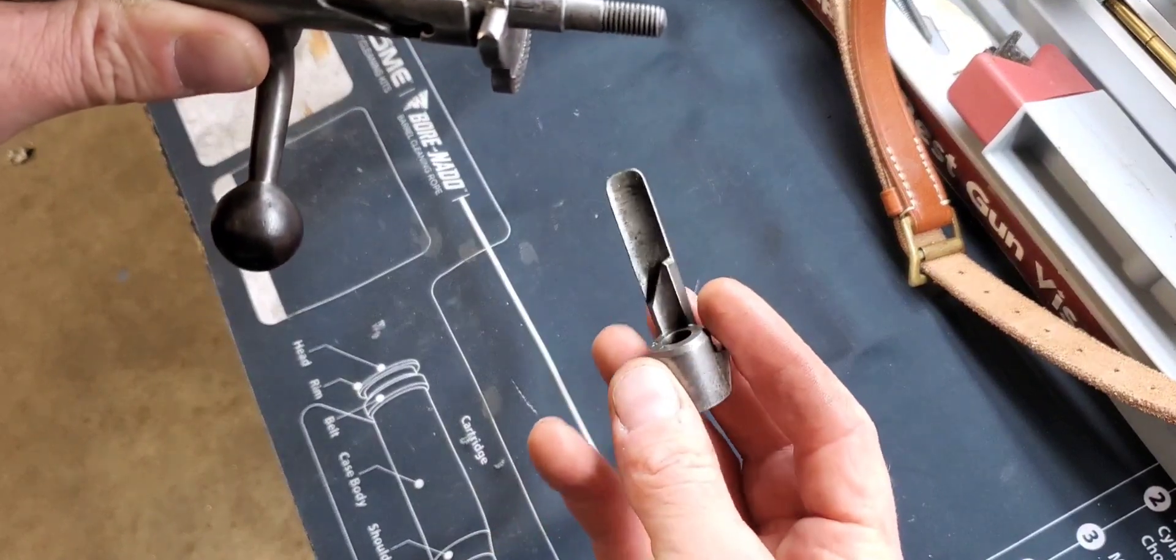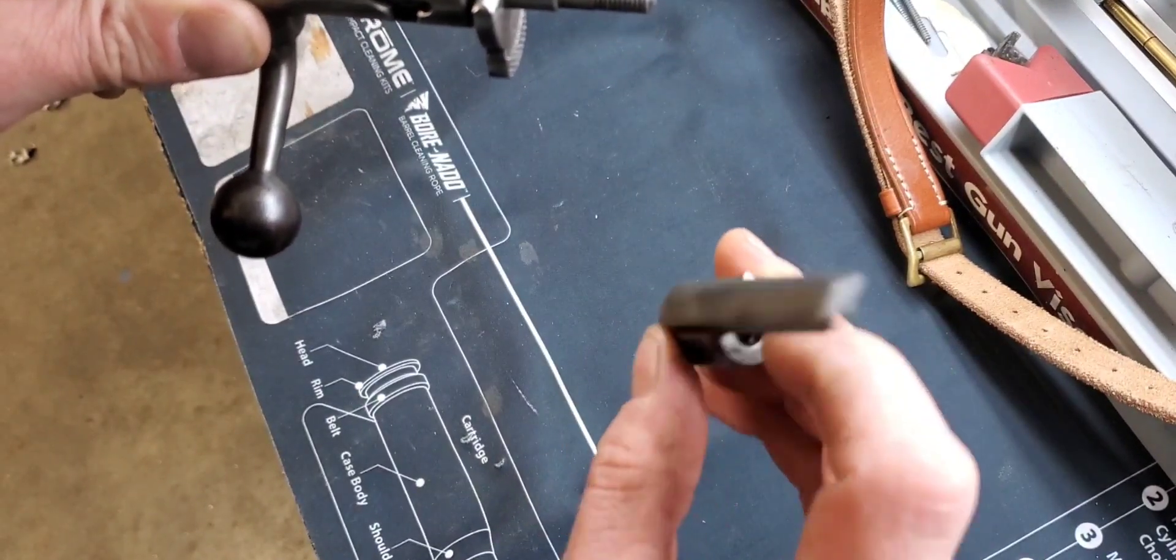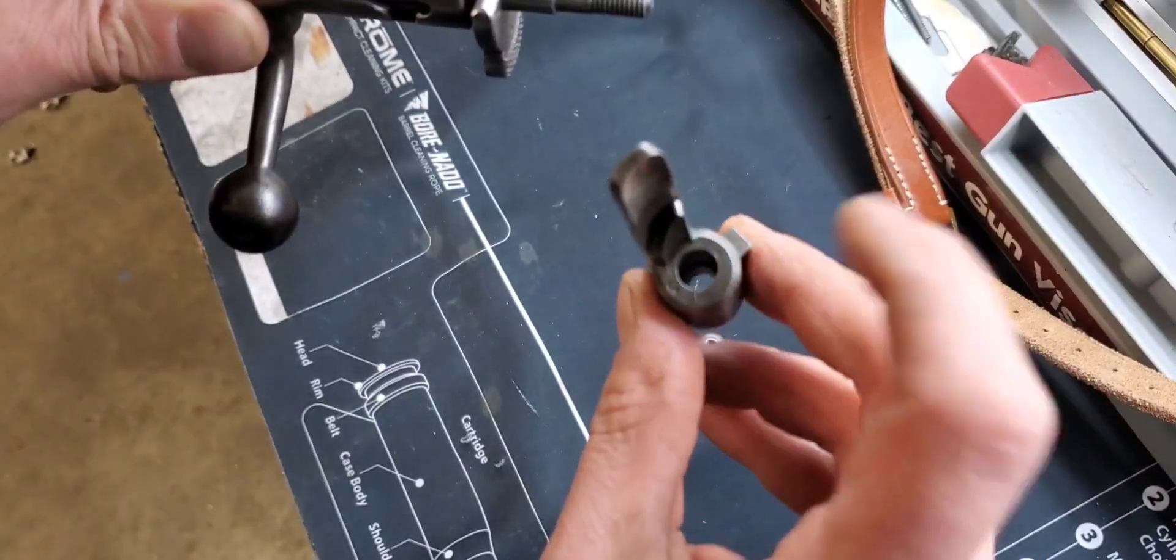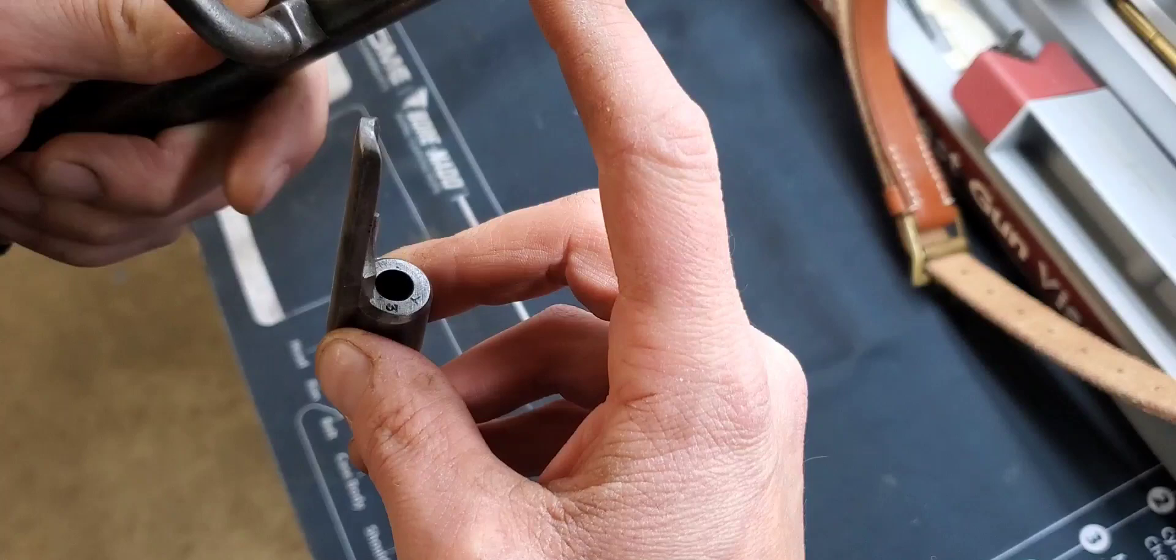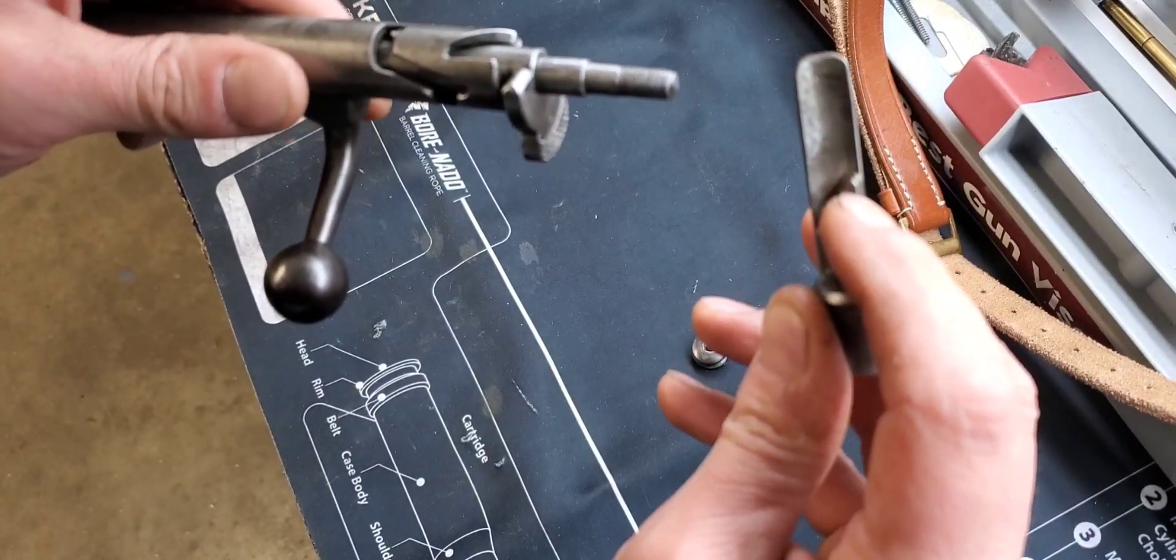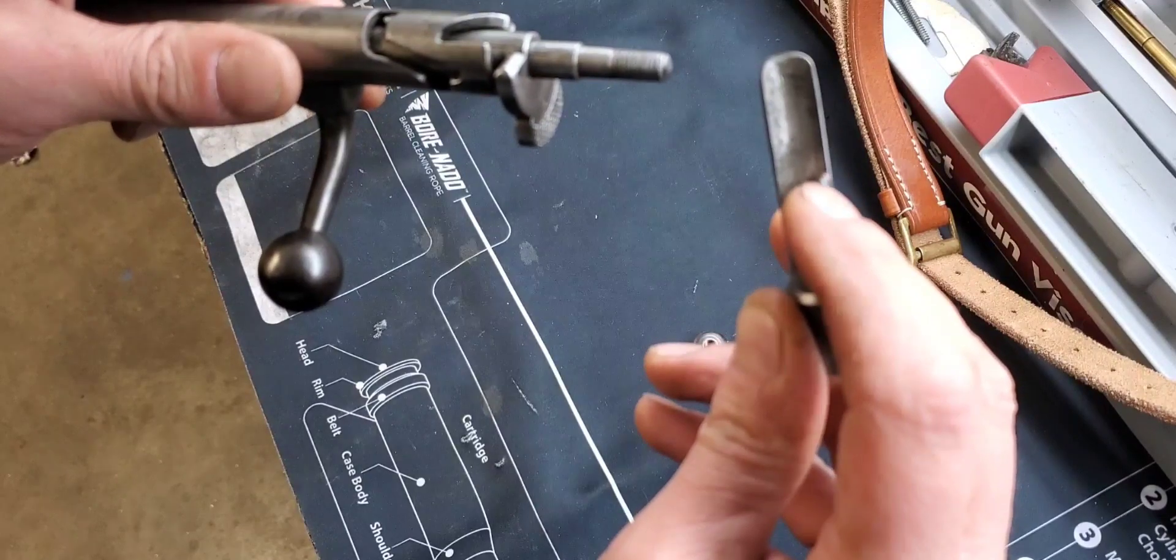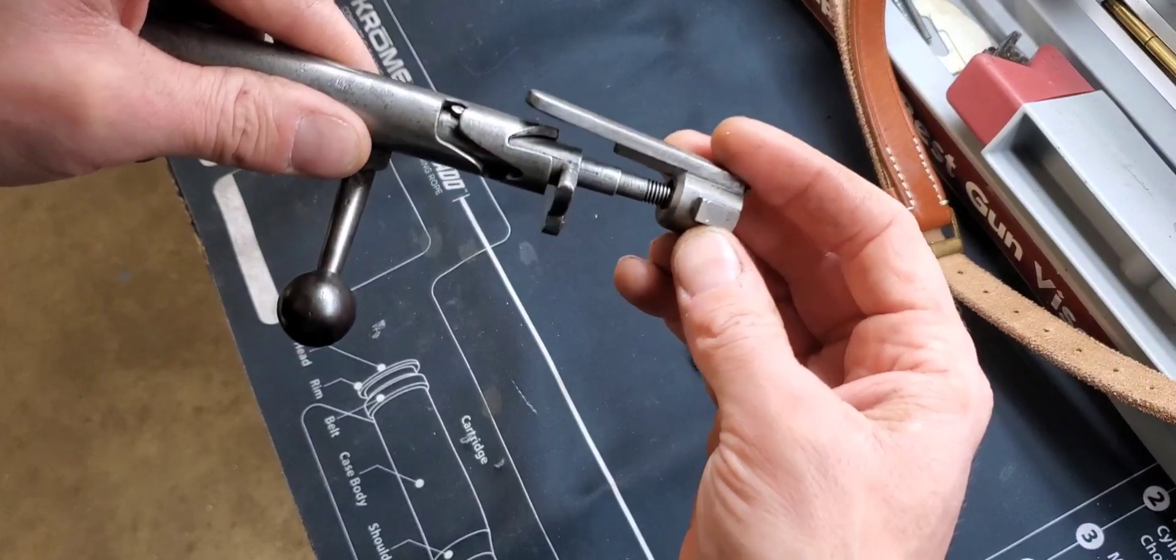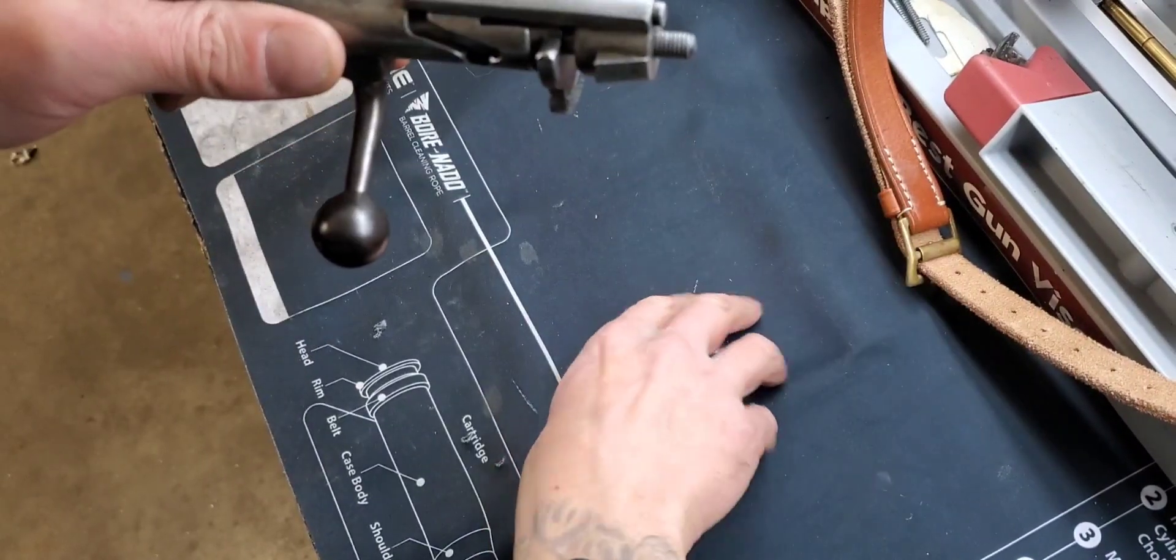Now we're gonna take our cocking piece. There's a flat side that corresponds with this flat side on the firing pin. I found the easiest way is just to take this little notch here and align it into that groove, and that lines you right up.